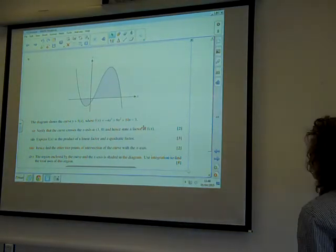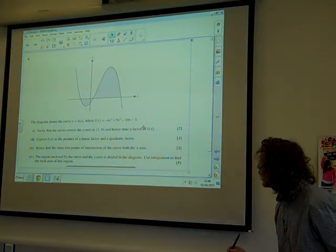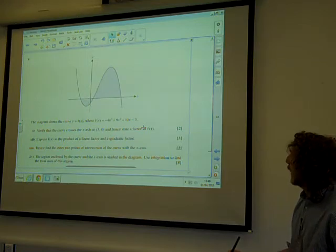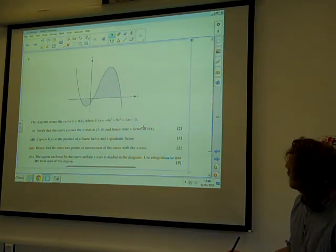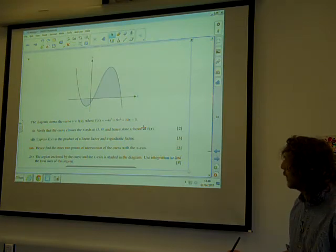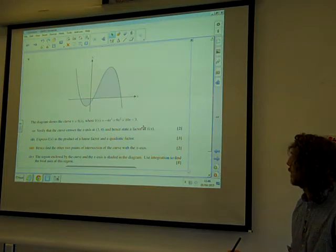Right, the final question. The diagram shows the curve y = f(x), where f(x) is -4x³ + 9x² + 10x - 3. There it is. Verify that the curve crosses the x-axis at (3, 0) and hence state a factor of f(x).